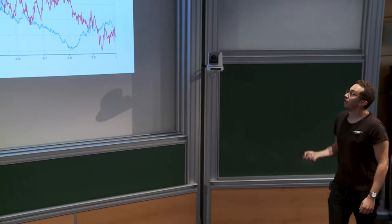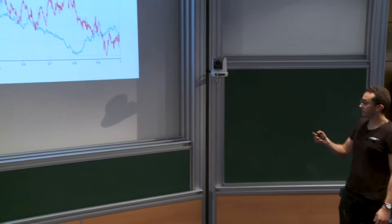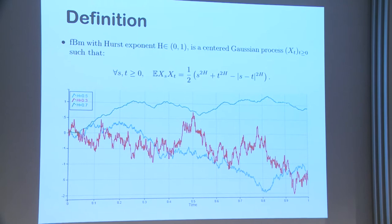It's a centered Gaussian process given by this covariance structure. For the purists, it's a fractal as well — it has stationary increments and verifies self-similarity.